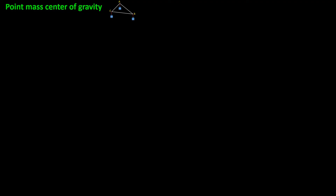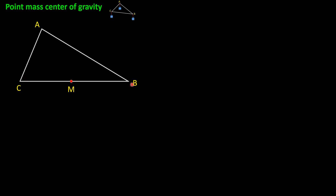The first case is point mass center of gravity. Let's consider triangle ABC, where equal masses are connected at vertices A, B, and C. Now the center of gravity of B and C will be at the midpoint of BC, because we assume that the same weights are connected at B and C. The total center of gravity of this triangle will be somewhere along this line, which is the median coming from vertex A. So we know that the center of gravity of this triangle is along the median coming from vertex A.